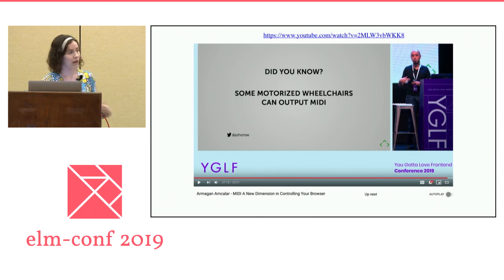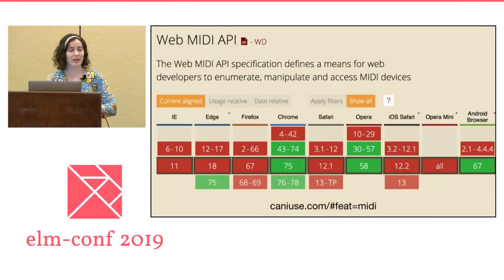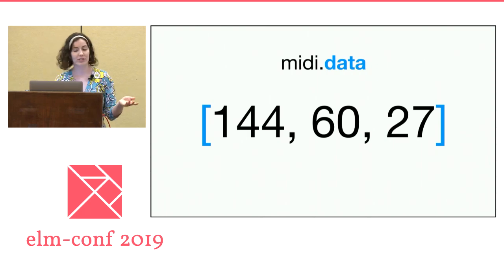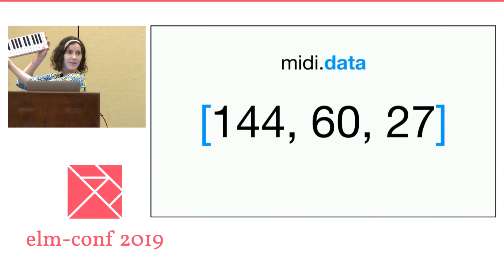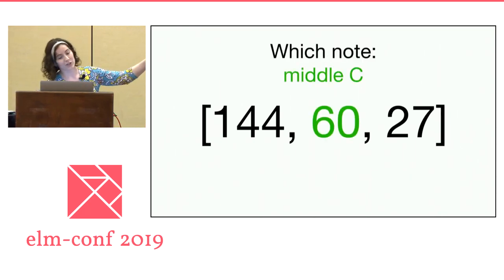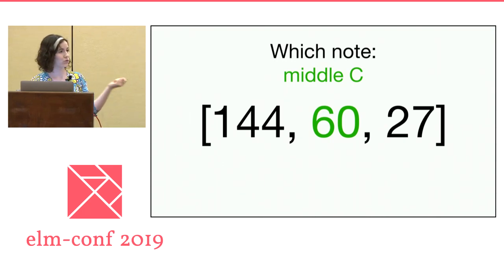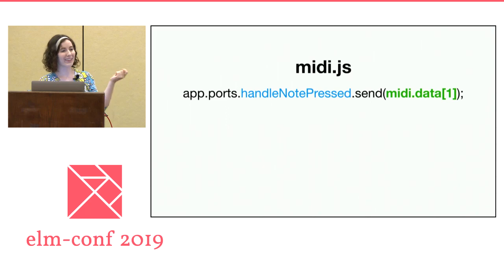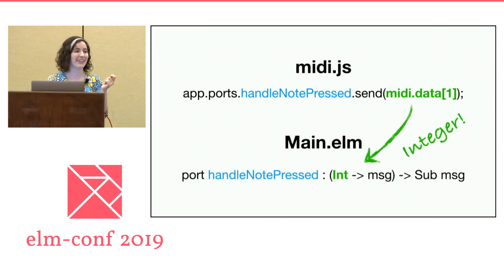I also learned very recently that some motorized wheelchairs can actually output MIDI, which I want to learn more about. But for now, Google introduced MIDI to the web browser in 2015. It's not super well-supported, but if you have Chrome, you can run with this. In JavaScript you get an array every time somebody presses a button on your keyboard. The only value I'm interested in is the middle one, which represents which key was pressed. I used ports to get this into Elm — I literally send one integer over to Elm and then handle it from there. Super easy.